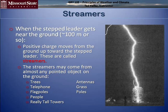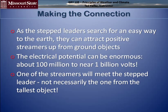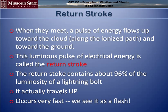So you make the connection. Electric potential can be amazingly large — 10 million to near a billion volts of electricity, amazing. And not necessarily the tallest object, but boom, here we go. The return stroke carries 96% of the luminosity. It actually travels upward and occurs very fast — we see it as just a simple flash.